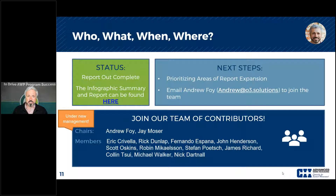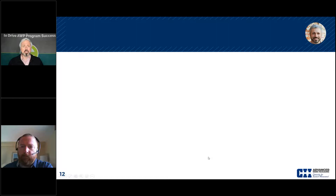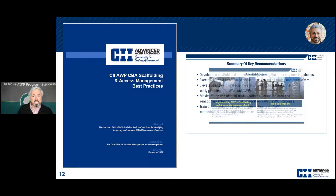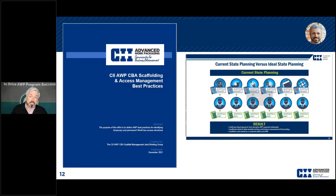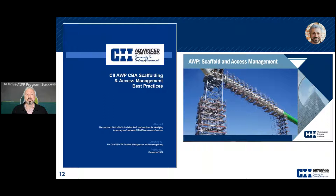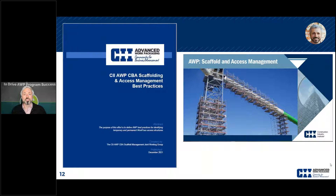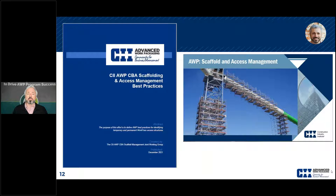There is a significant document available — this best practices document is about 50 pages long and goes into real detail around the best practice itself, project controls, and other aspects of addressing scaffold and access management from an AWP perspective. There is also a 10-page infographic summary you can use to educate your organization. Moving forward, we are focusing on attacking implementation barriers — building tools around ROI, contract strategies, value channels, and strategies for overcoming those barriers.